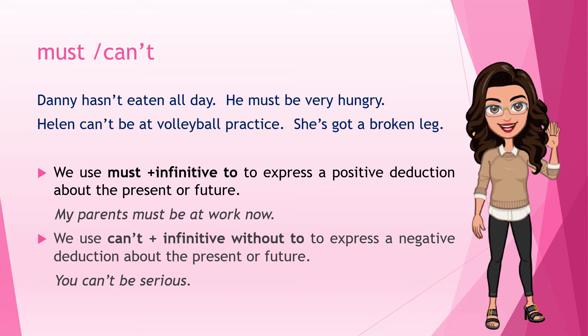Now let's look at 'must' and 'can't.' Remember, 'can't' is actually 'cannot' — it is a single word. 'Danny hasn't eaten all day — he must be very hungry.' 'Ellen can't be at volleyball practice — she's got a broken leg.' We use 'must' plus the infinitive to express a positive deduction about the present or future. A deduction is when you make a guess. For a negative deduction, we use 'can't' plus the infinitive without 'to.' Example: 'You can't be serious.'